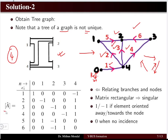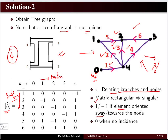We now create the bus incidence matrix A-hat, where columns represent nodes and rows represent branches. We fill the elements by relating each branch to each node: if a branch is oriented away from a node, the entry is +1; if the branch is coming towards the node, the entry is −1; if there is no incidence between a branch and a node, the entry is 0.